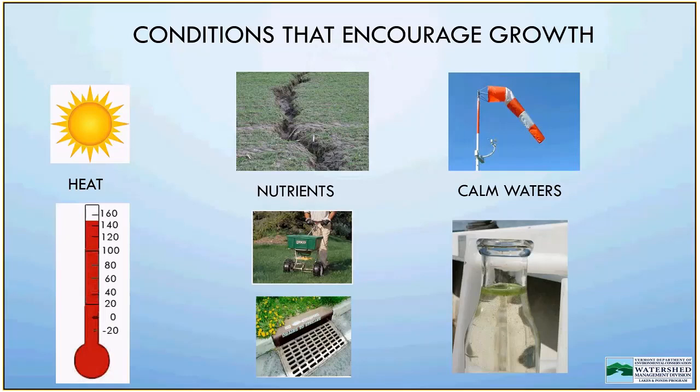Cyanobacteria can regulate where they are in the water column using small gas vacuoles — tiny air bubbles within their cells — to control how high up they float. During the day they typically rise near the top of the water to access sunlight for photosynthesis; at night they may drop into deeper water where nutrients are more available. This causes cyanobacteria to form scums at the surface, as shown in this milk bottle image, under calm weather conditions. With waves or strong currents, they are distributed through the water rather than forming a surface scum.